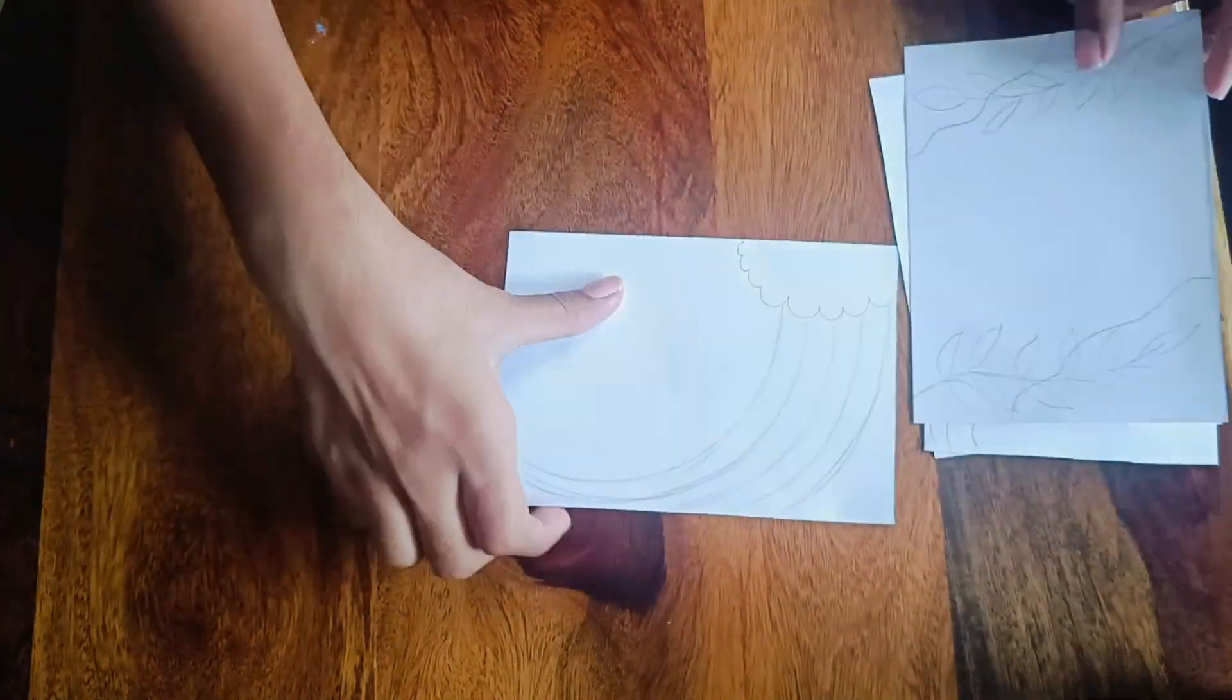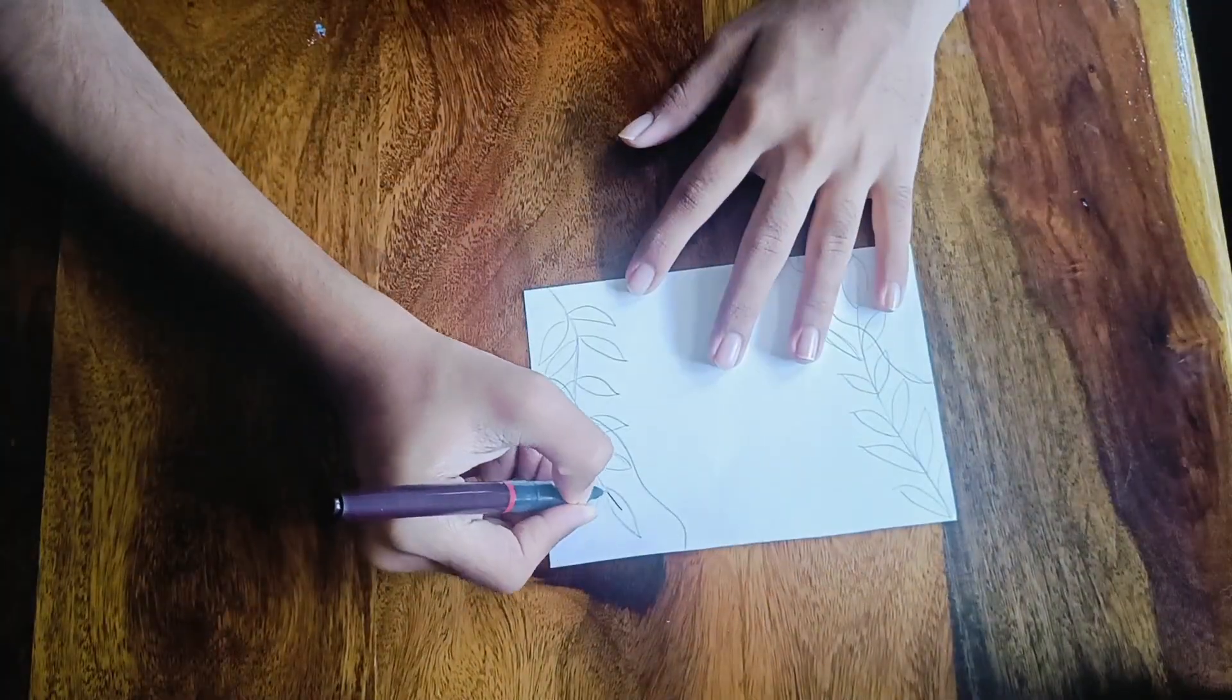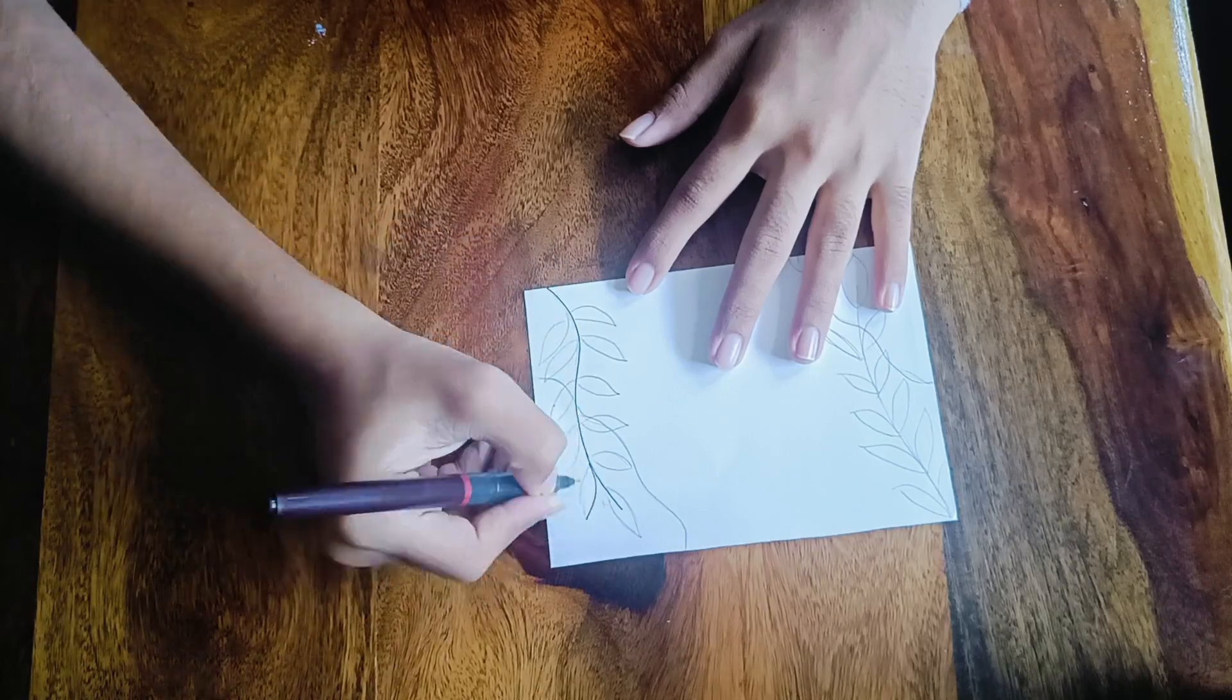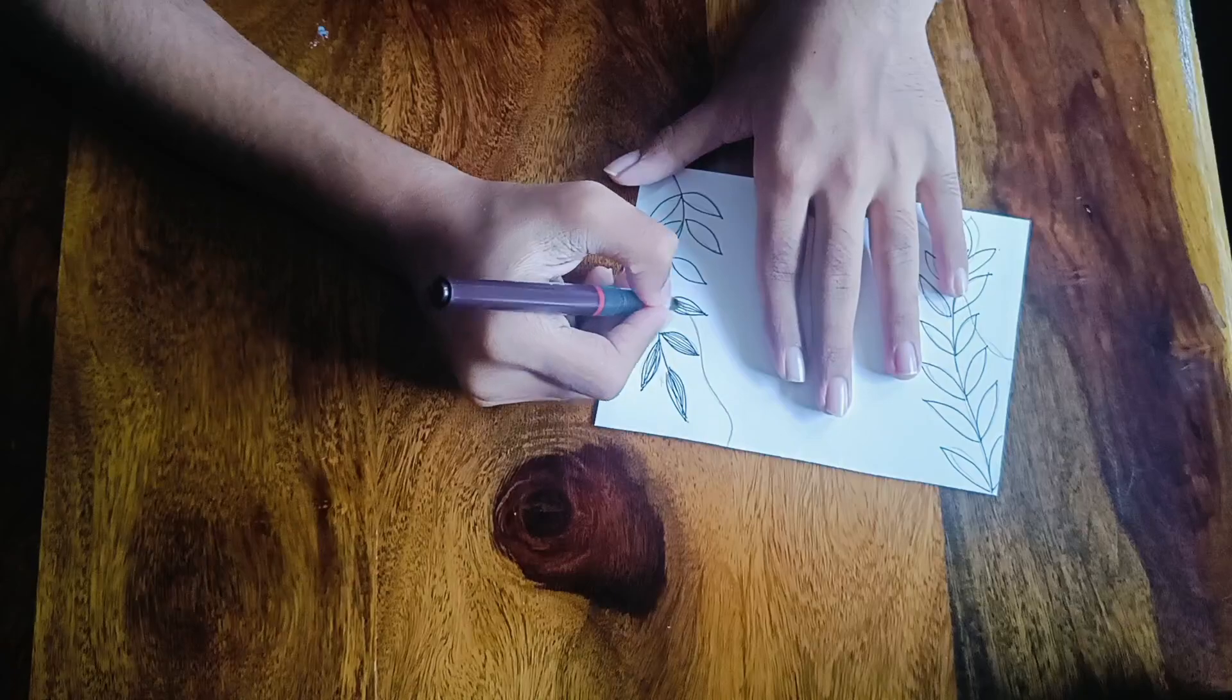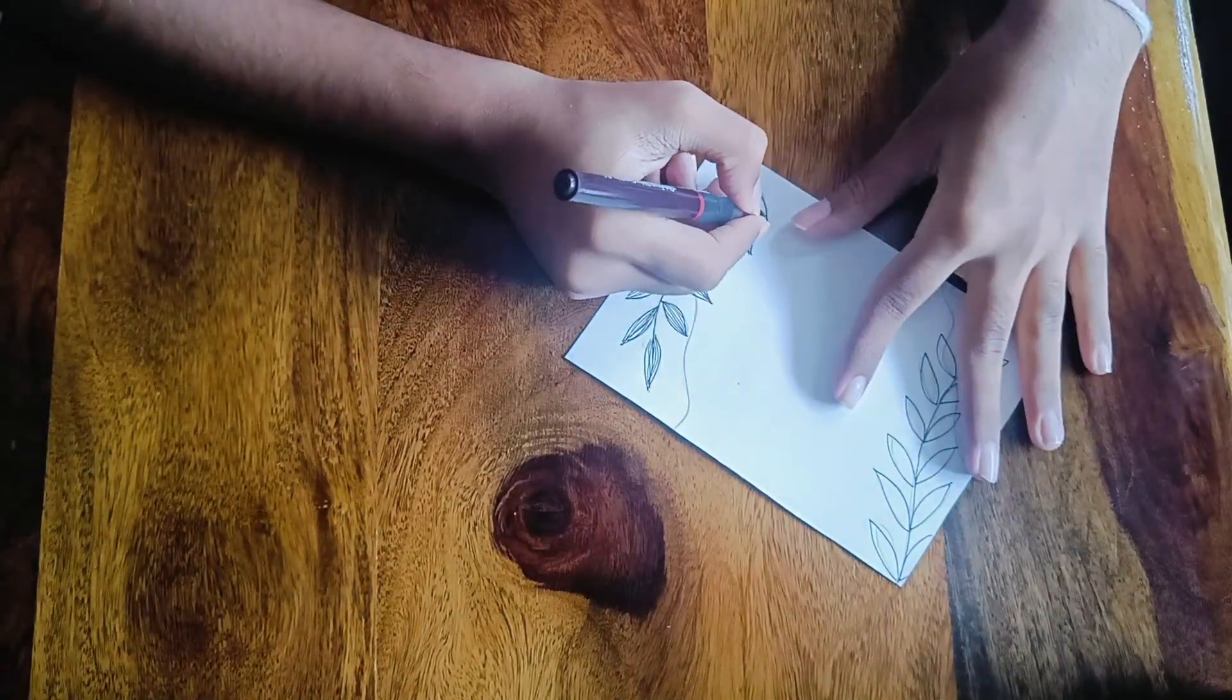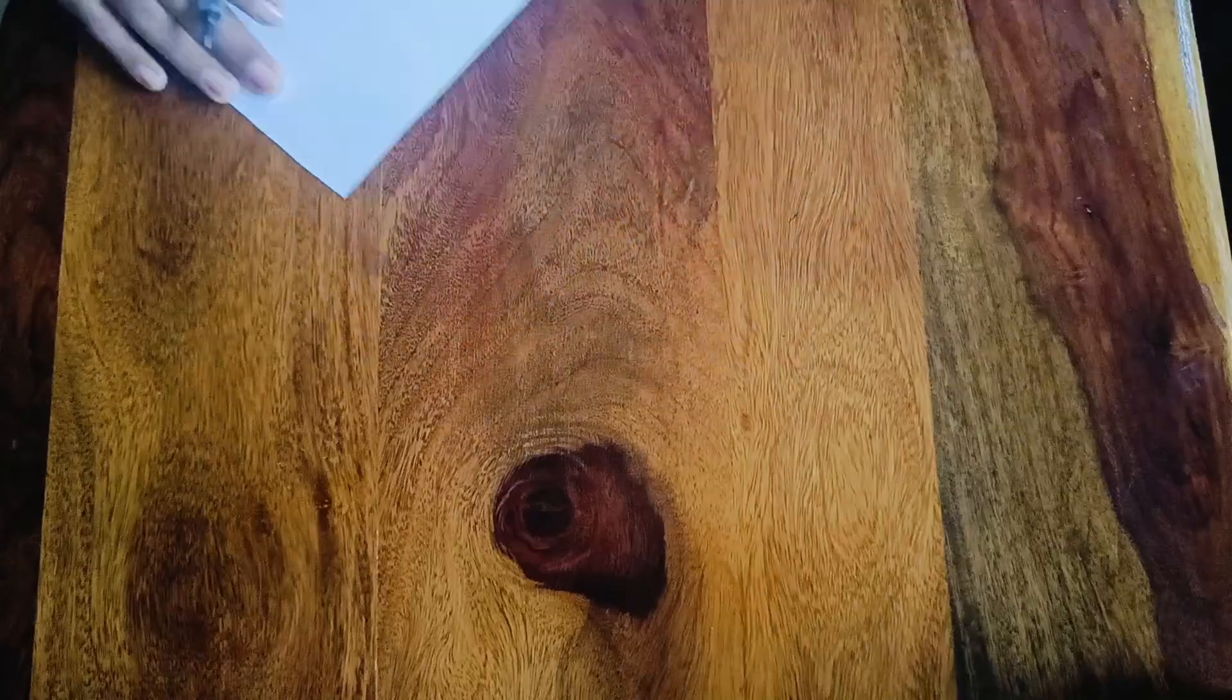Now we are going to outline it with a rotary pen. You can also use a permanent marker, fine liners, or black pen. I'm going to fill the leaves inside. We're not going to outline the curves in the first design. So we have done the outline for all of these.